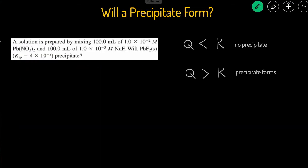Now let's take a look at the next problem. This problem is similar to the previous one, except this time we're mixing two solutions together, so the volume is changing. It says a solution is prepared by mixing 100 mL of a given concentration of lead nitrate with 100 mL of a given concentration of sodium fluoride, and we're asked if PbF₂ will precipitate or not.